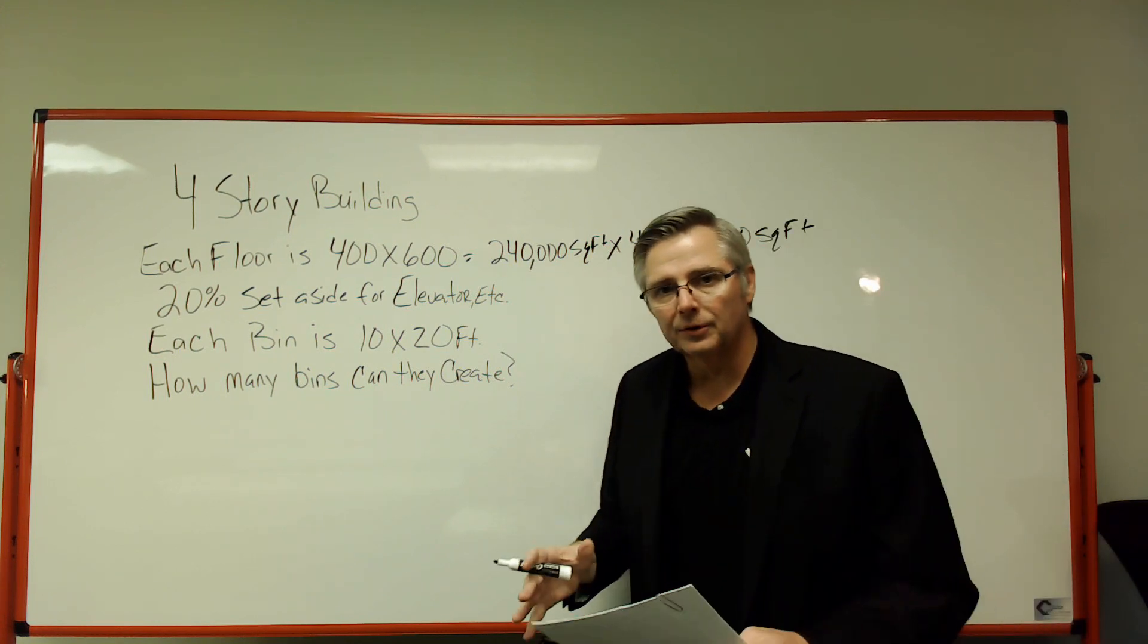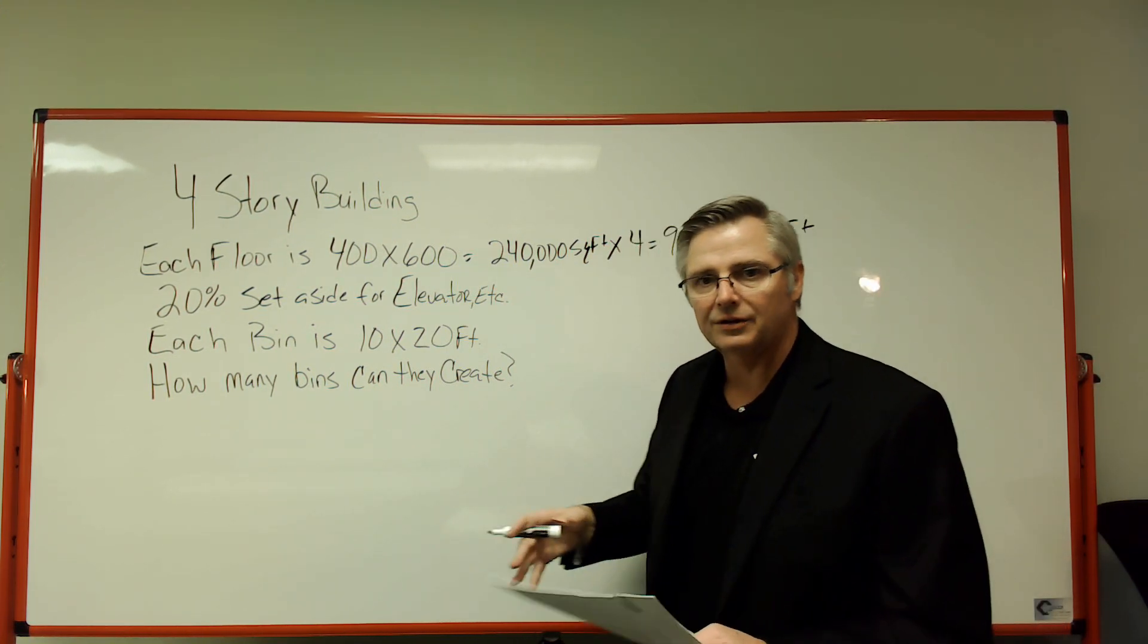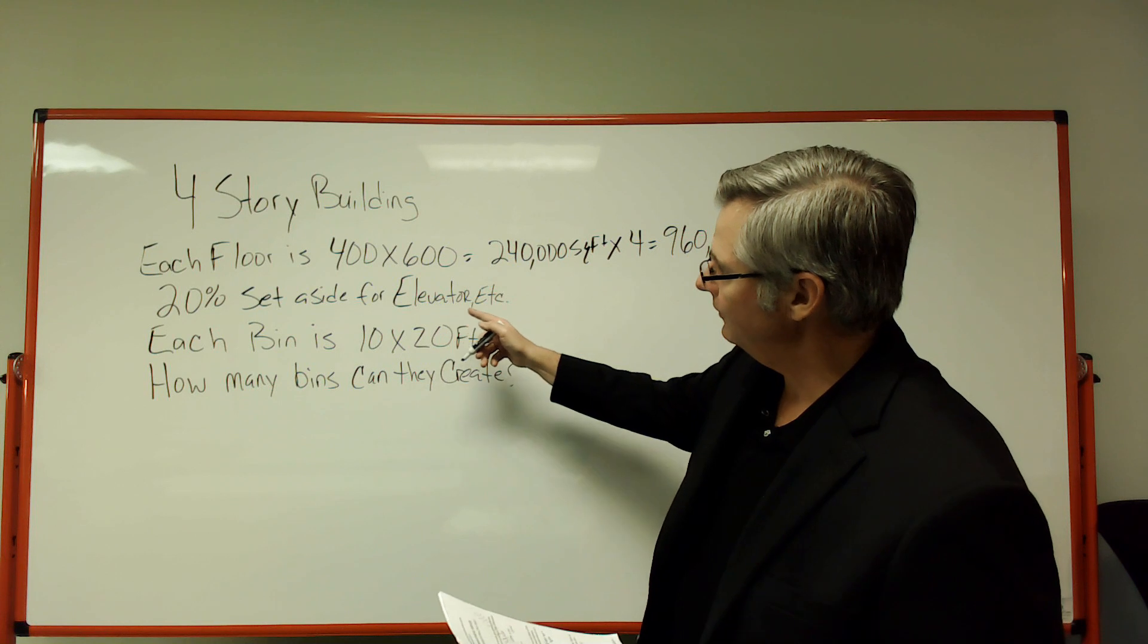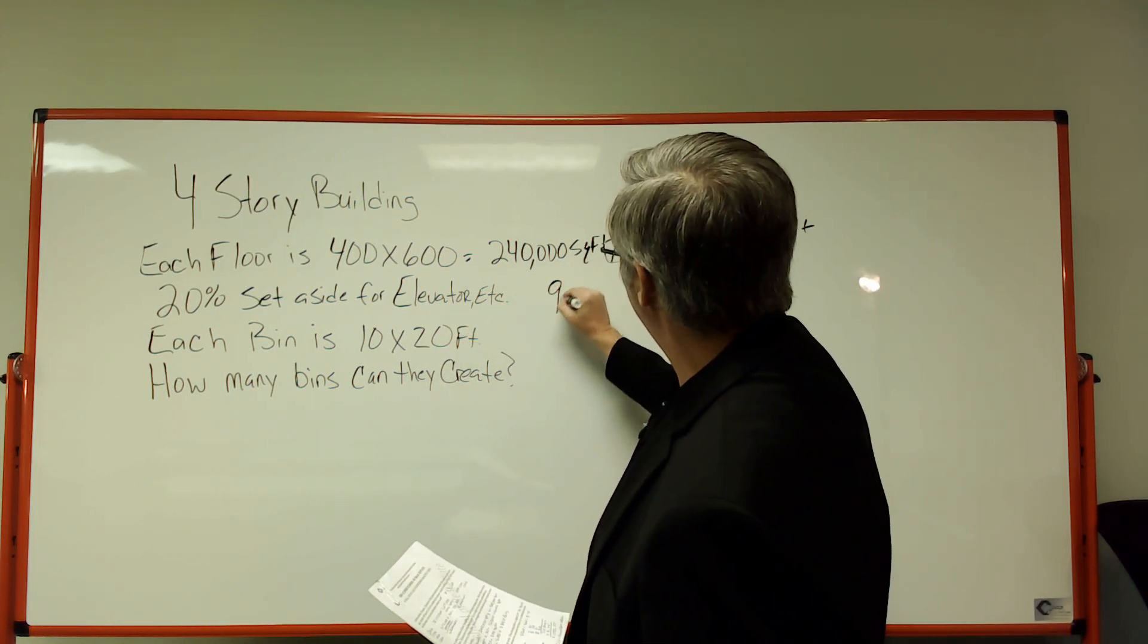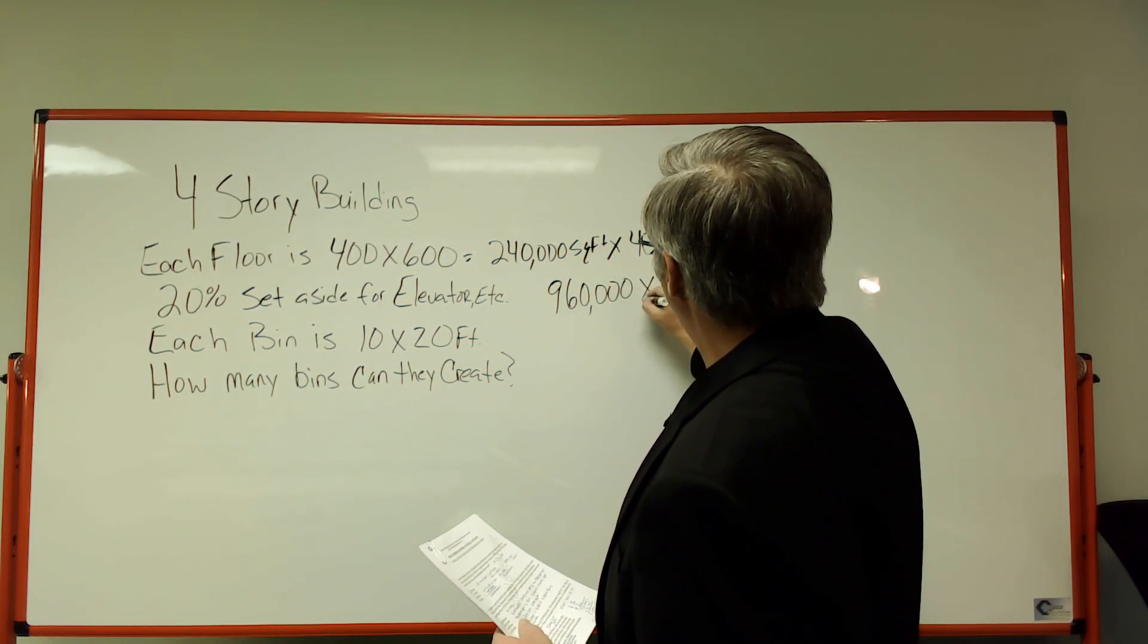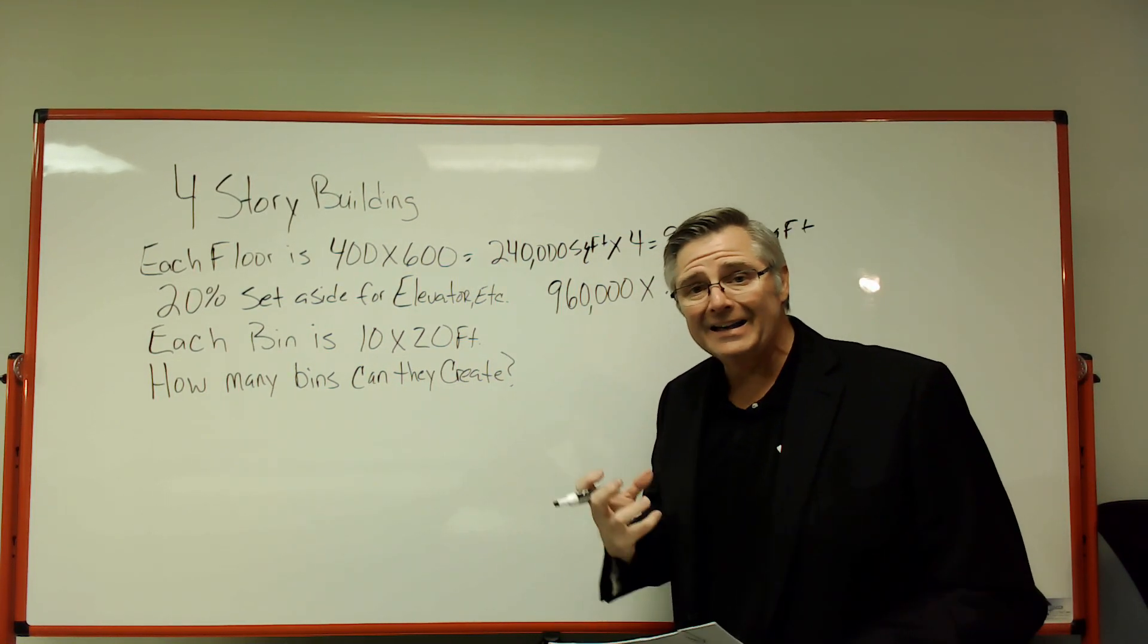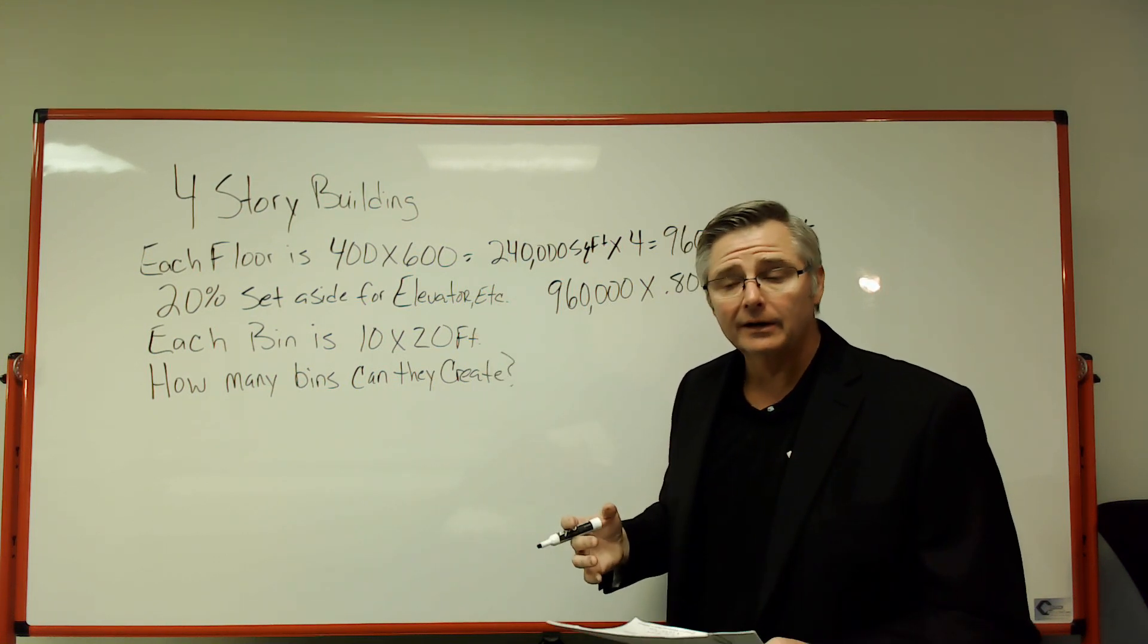Now if you just had this building with no elevators or anything taking up any other space, you've got 960,000 square feet total. The question tells us that 20% is going to be set aside for elevators. So I'm going to take that 960,000 square feet and multiply that times 0.80. That 0.80 is because I've got 80% to work with, since you're using up 20% for elevators and other stuff.